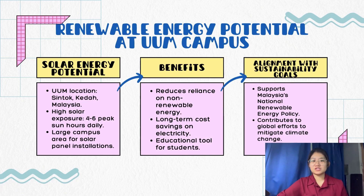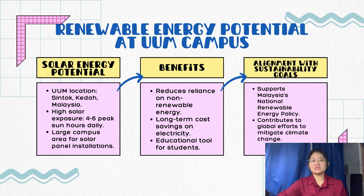Now let's move on to the potentials for solar energy at UAM. The UAM campus in Sintok, Kedah, Malaysia receives abundant sunlight year-round, making solar power a viable option. The campus has ample space for solar panel installations, including rooftops, fields, and parking slots. Solar energy can significantly reduce reliance on non-renewable energy sources, leading to long-term cost savings on electricity.